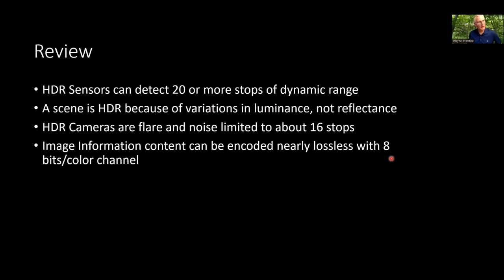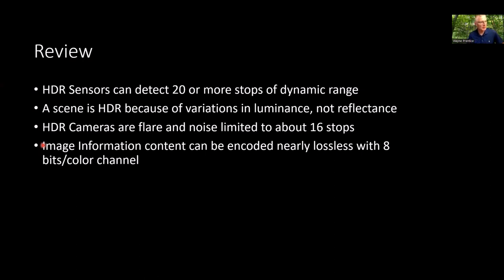Just to reflect on where we are: HDR sensors can detect 20 or more stops of dynamic range. HDR is necessary because of variation in scene luminance, not reflectance. HDR cameras are flare and noise limited to about 16 stops of dynamic range. And that information can be encoded nearly losslessly with eight bits per channel. If you remember this part, we can move on — the rest was supporting detail.